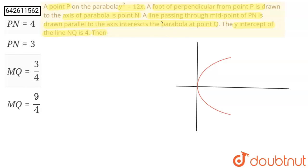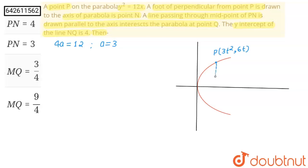So this is our parabola y squared equals 12x. Consider point P with parameter t. The value of 4a is 12, so 4a equals 12, giving a equals 3. So the coordinates of P will be 3t squared comma 6t, that is (at², 2at) with a=3. The foot of perpendicular from point P to the axis of the parabola is point N, so N has coordinates (3t squared, 0).